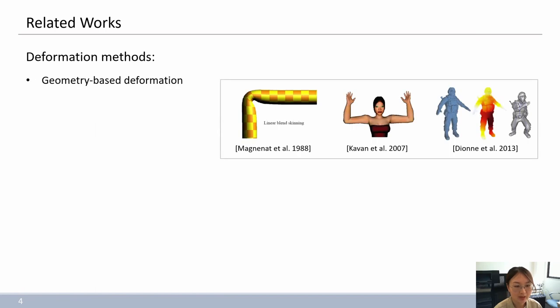two well-known methods, LBS and DQS, are widely adopted in real-time applications. However, they also suffer from undesirable volume loss and joint collapsing artifacts. These artifacts need to be further manually fixed by highly skilled animators and the time-consuming process has to be repeated while deforming new characters.